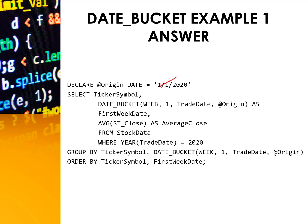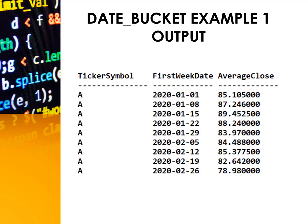Here is where we define the date bucket to be week, and then one week. Here is where we define the year to be 2020, and then we will order our answer by ticker symbol and then by the first day of the week. This is a useful query to show the weekly average for each ticker symbol for every week of 2020, and here is the output of that query.